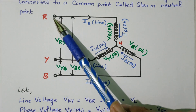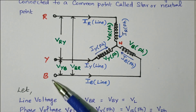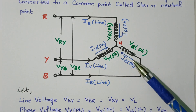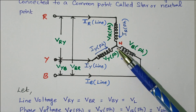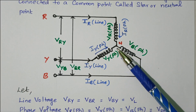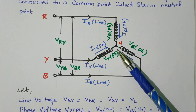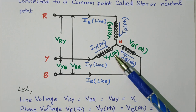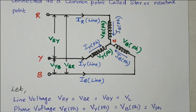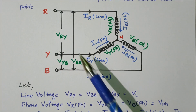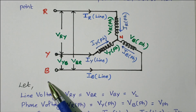So these are the three phases available: R, Y, B — this is called a line. We have three phases: R phase, Y phase, and B phase. In this connection, one end of each phase — R phase, B phase, Y phase — is connected together. That common point is called a star point or neutral point. The other ends are taken out as R phase, Y phase, and B phase terminals.